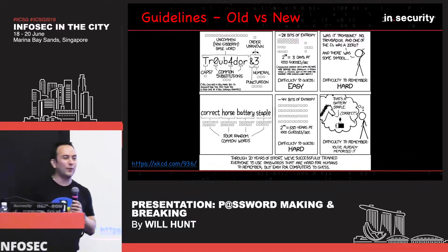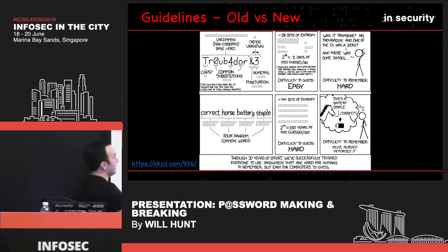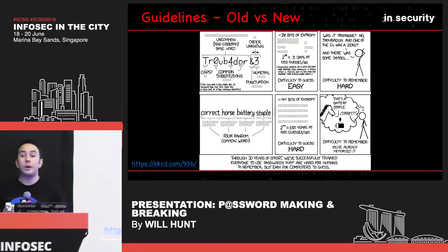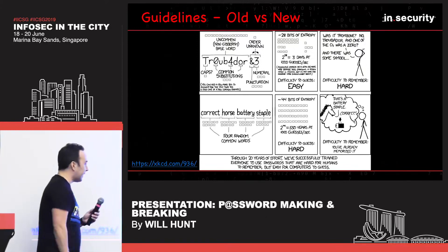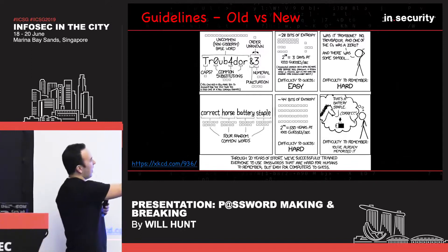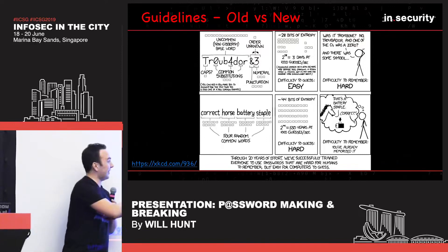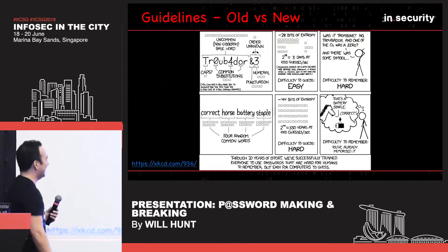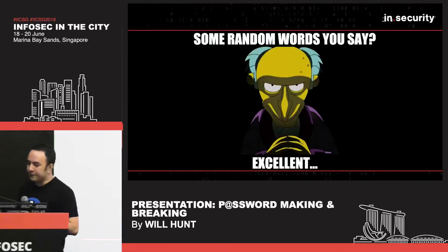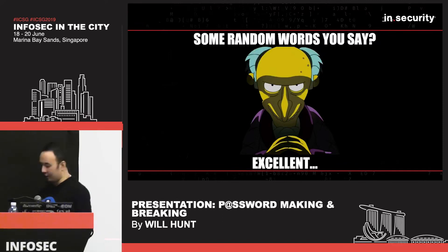Has anyone seen this XKCD comic? When NIST pushed out their 2017 guidelines it was flying around everywhere. It targets online attacks but the principle applies offline too. The key point: through 20 years of effort we've successfully trained everyone to use passwords that are hard for humans to remember but easy for computers to guess — because we've all been told to make passwords that look complex but are predictable. We should be looking at four or more random common words. Though notably, some people actually used 'correct horse battery staple' as their password after seeing this comic, and those words do appear in dictionaries.